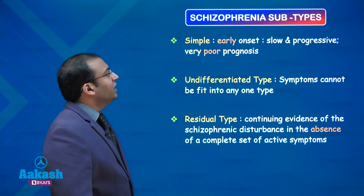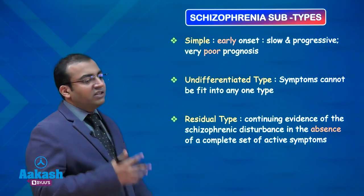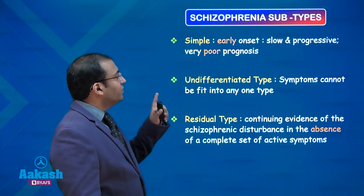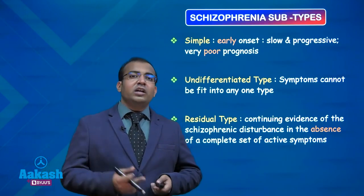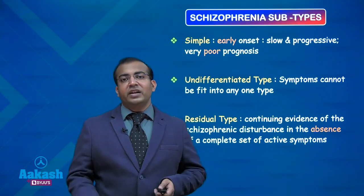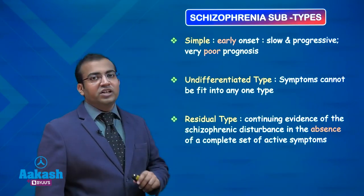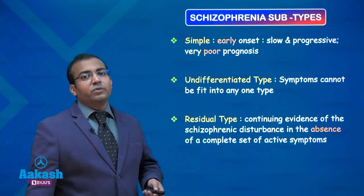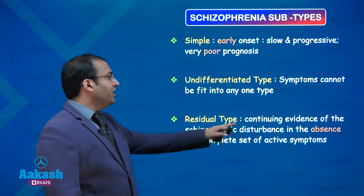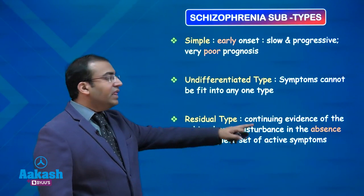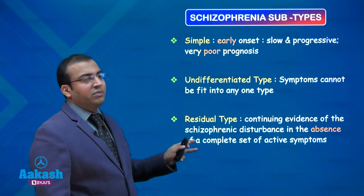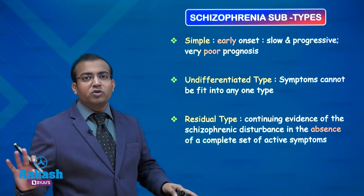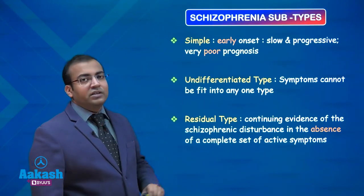The next is simple schizophrenia, where the patient has an early onset of symptoms and a slowly progressive, deteriorating picture with a poor prognosis. The next is the undifferentiated type — when you are not able to classify a patient with schizophrenia into any specific subtype. Finally, the residual type: once the patient is emerging from the disease and getting treated, there is still continuous evidence of schizophrenic disturbances in the absence of predominant affective or psychotic symptoms. That continuous disturbance persisting for years is termed the residual subtype of schizophrenia.